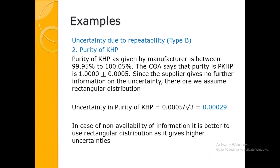The purity of KHP: the certificate states it is 1 plus or minus 0.0005, meaning 0.05 percent uncertainty. The manufacturer has not specified the distribution, so we assume rectangular distribution. We convert 0.05 percent to a fraction — 0.0005 divided by 100 — then divide by square root of three. This gives the uncertainty due to purity of KHP. In the absence of information, it is better to use rectangular distribution as it gives higher uncertainties than triangular distribution.